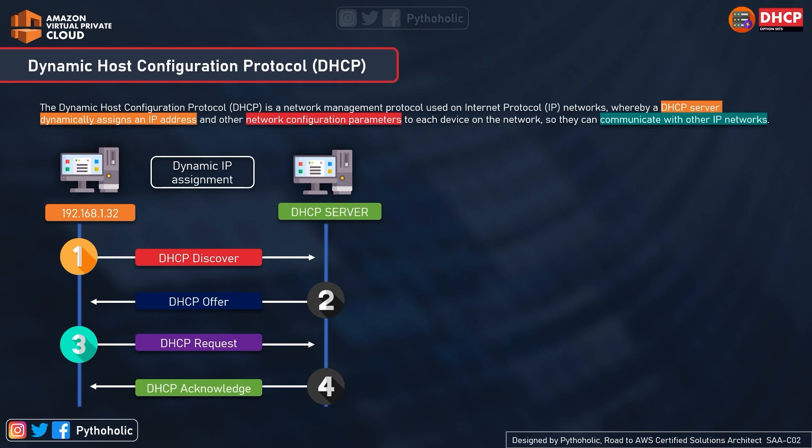The second step is DHCP Offer. The DHCP server sends out a DHCP Offer message and broadcasts network information like IP address, DHCP IP, lease IP, NTP server details, and more to the network. Once the client identifies the DHCP server, in the third step, the host sends a DHCP Request with the IP address it wants to use.